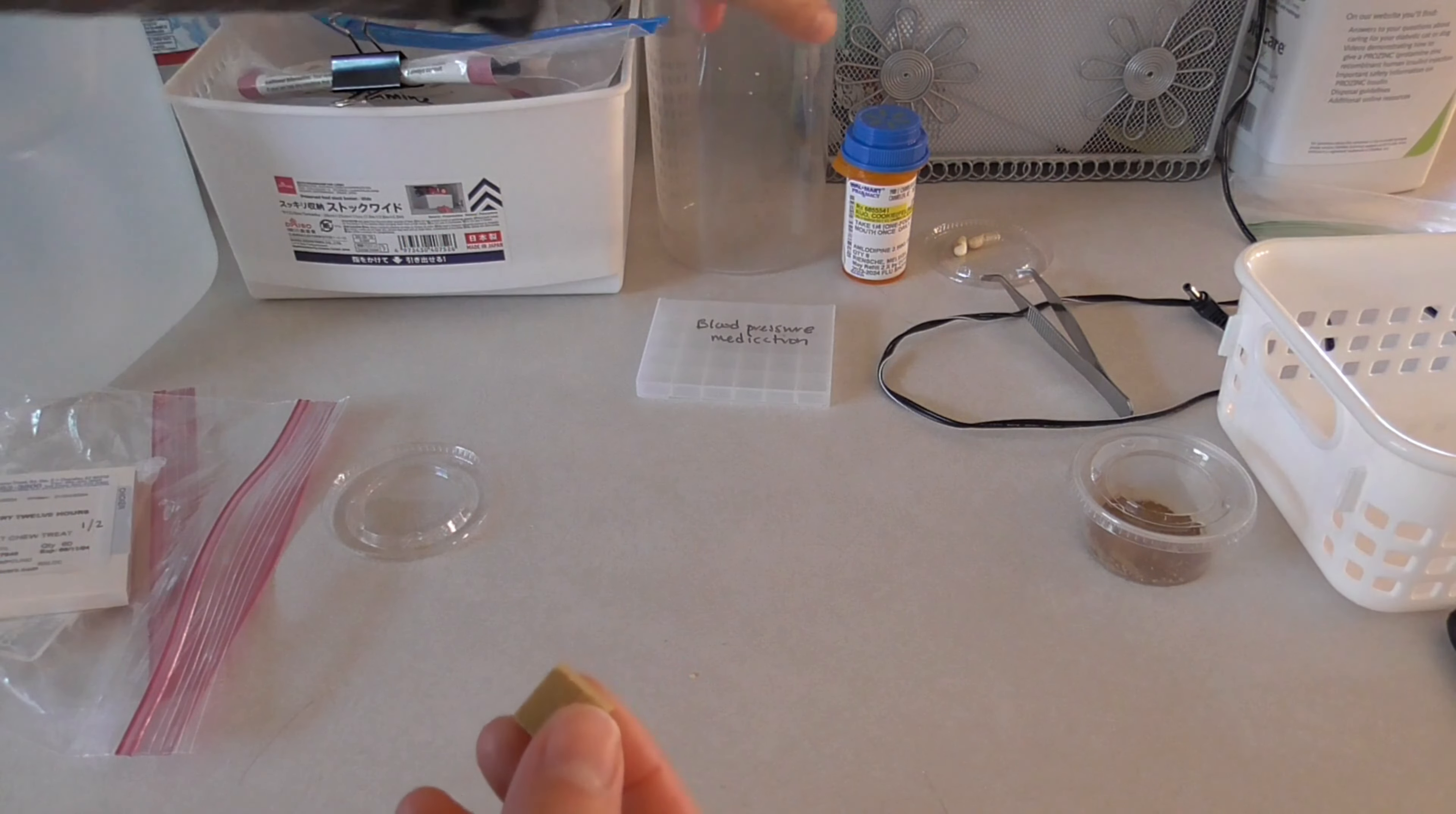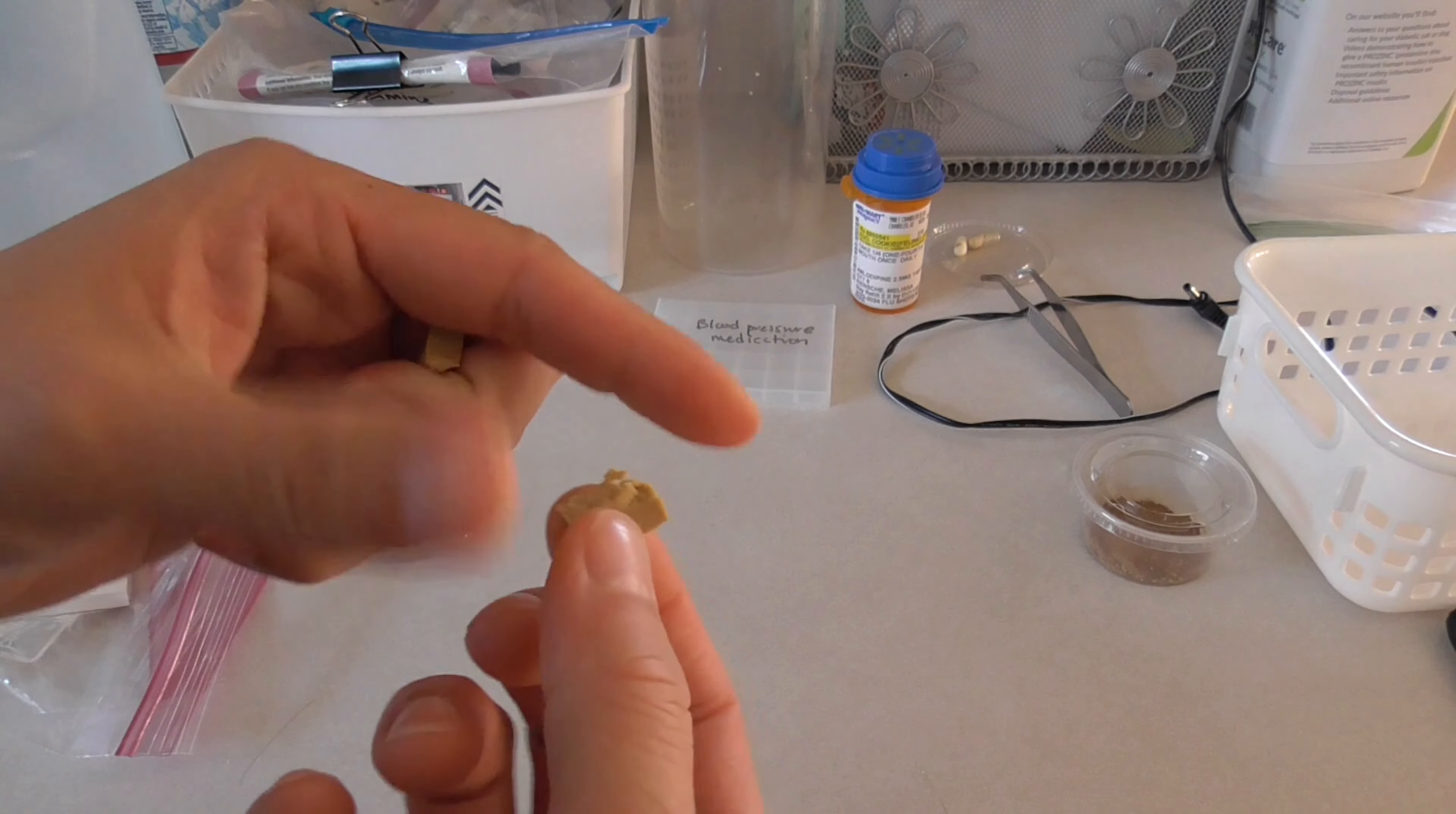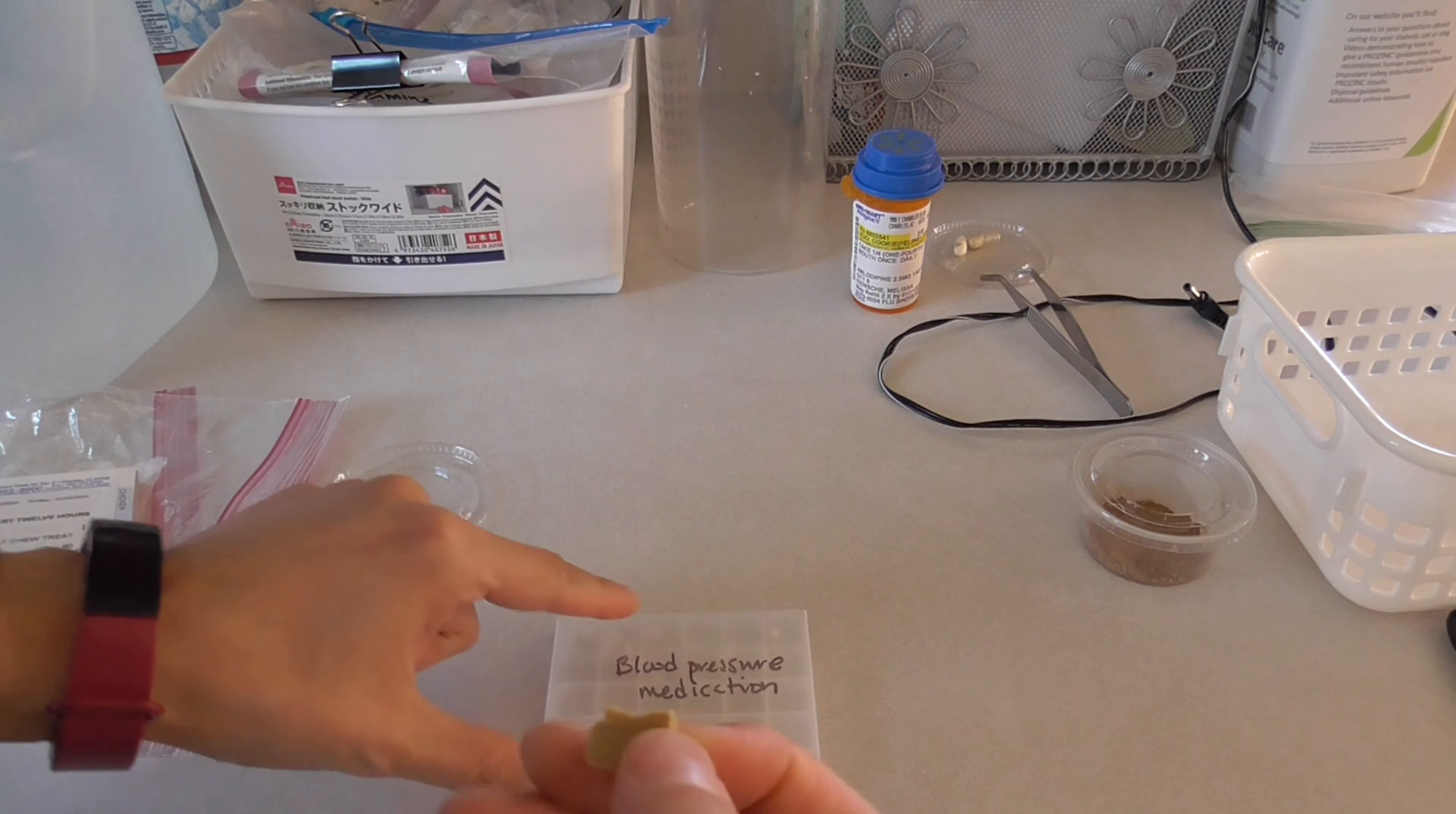The second medication that Cookie is on is amlodipine, which is to treat her high blood pressure, most likely due to her renal disease. What I do is take one of these soft treats for the thyroid medication and break it in half. One of them will have nothing in it. The other one will have the amlodipine stuck in it.